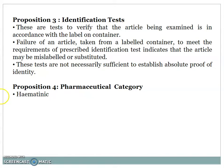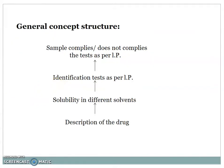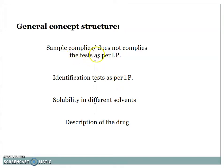Pharmaceutical category: ferrous sulfate is hematinic in nature. The general concept structure is: first, describe the drug; then check solubility in different solvents; and perform the identification test as per Indian Pharmacopoeia. After performing all tests, we determine whether the sample complies or does not comply with the test as per IP.